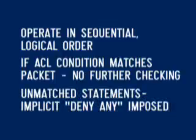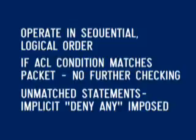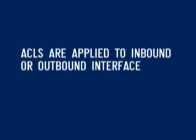If a packet does not match conditions in a first statement, the router drops to the next statement in the ACL and so on. If all the ACL statements are unmatched, an implicit deny any statement is imposed. This means that even though you will not see the deny any as the last line of the ACL, it is there.